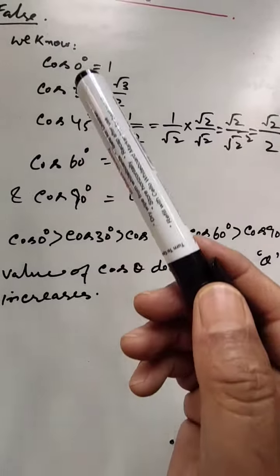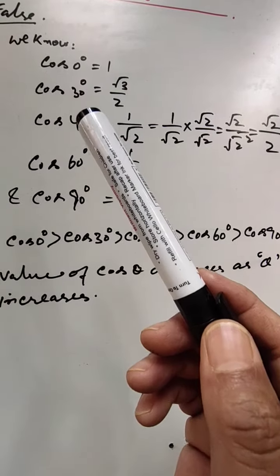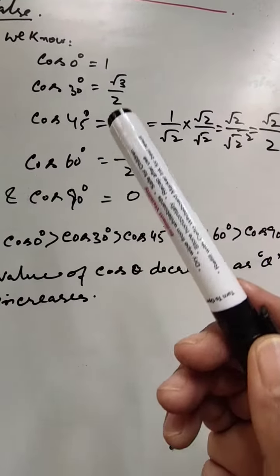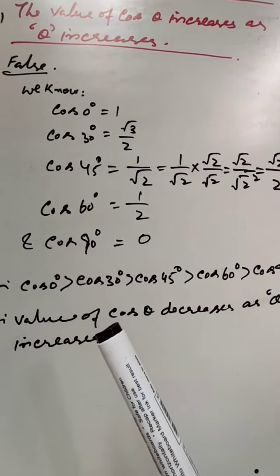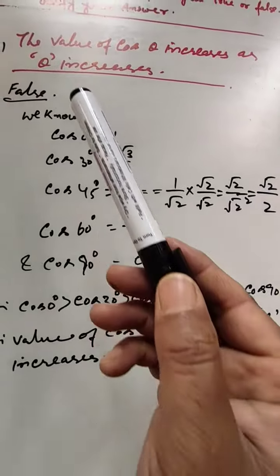As θ goes on increasing from 0, 30, 45, 60, and 90, the value also goes on decreasing. This is against the statement given in the question, so it is false.